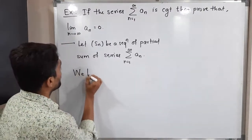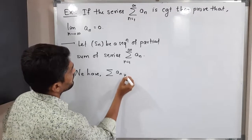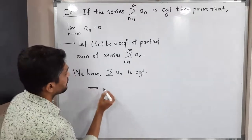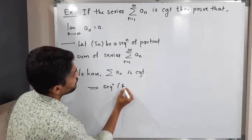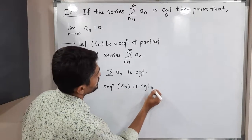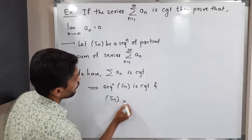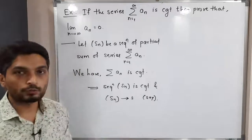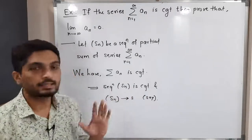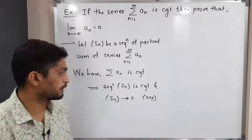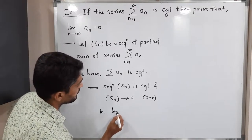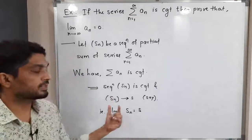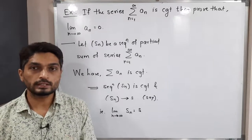We have that summation a_n is convergent, so therefore the sequence S_n, which is the sequence of partial sums, is also convergent. S_n converges to S. We are considering this: since the sequence is convergent, it converges to some point which we are calling S. The same thing we can write as: limit n tends to infinity of S_n is equal to S.